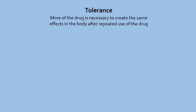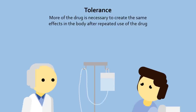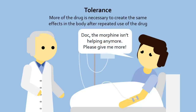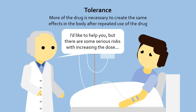Tolerance is when repeated use of a drug desensitizes the body so that more and more of a drug is necessary to create the same effects. Tolerance can be so extreme that some chronic pain patients who have used morphine for an extended period of time require 100 times the normal dose of morphine for a mild pain-killing effect. This is a huge problem — the higher the dose of opioid used, the higher the risk of overdose and death.